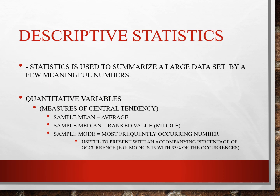Descriptive statistics are statistics used to summarize a large dataset by a few meaningful numbers. Quantitative variables are measures of central tendency, if you remember in our first-year lectures. Sample mean is the average. Sample median is the middle value. And sample mode is the most frequently occurring number — this is useful to present with an accompanying percentage of occurrence.